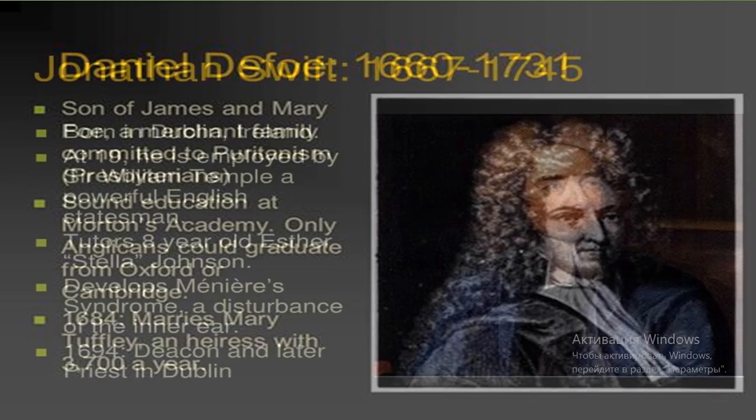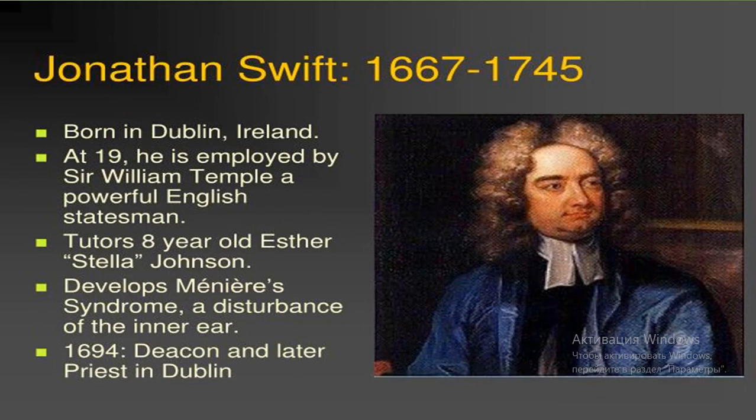Jonathan Swift was born in Dublin but came from an English family. He didn't know his father because he was born seven months after his death. His mother didn't pay much attention to him, and the boy was brought up and supported by his uncle. After finishing school, he entered Trinity College in Dublin, where he got his bachelor's degree in 1686. He then became a private secretary to Sir William Temple, a retired diplomat and writer. In 1692, Swift went to Oxford and took his Master of Arts degree. He began writing in 1680, but his first books, The Battle of Books and A Tale of a Tub, were published in 1704.